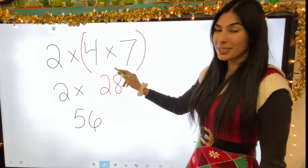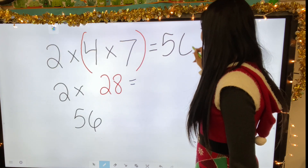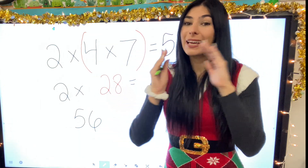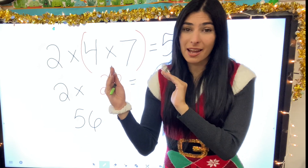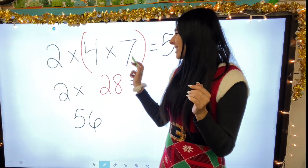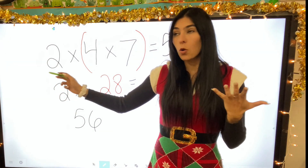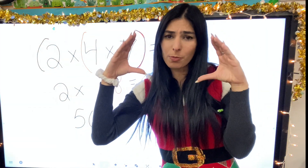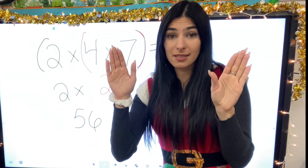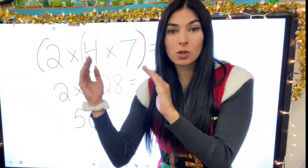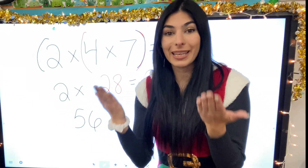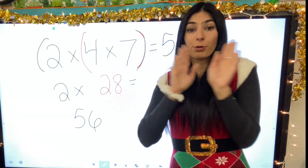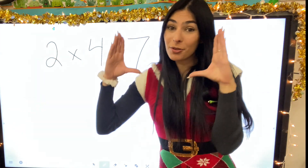So two times four times seven equals fifty-six. But what if the two and the four want to hang out first? They can — that's associative property. What if the seven and the two want to hang out? I can't put parentheses around both of them, but I can bring in the commutative property, where the factors themselves can switch places. Let's use commutative property to switch the numbers around.